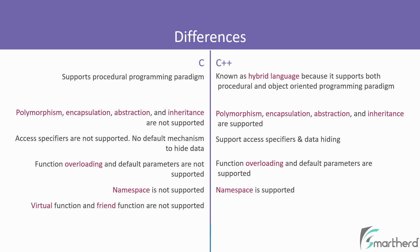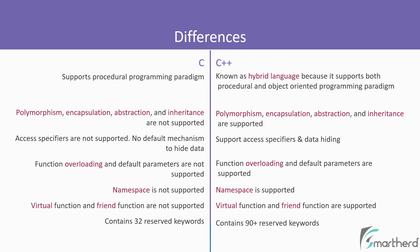Virtual function and friend function are not supported in C, but of course in C++ they are supported. In C, we have only 32 reserved keywords. But in C++, we have more than 90 reserved keywords. And with the release of new C++ versions, the number of keywords is also increasing each time.